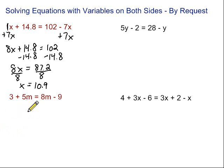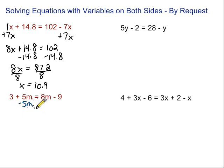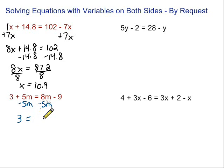Next up: 3 plus 5m equals 8m minus 9. Again, we've got variables on both sides so we want to get them all together. Let's get rid of the 5m's — we have a positive 5m, so we subtract those 5m's on both sides. These 5m's are gone so we just have 3 equals 8m minus 5m. If we have a pile of 8m's and take away 5 of those m's, we're left with 3m's. So 3m minus 9.